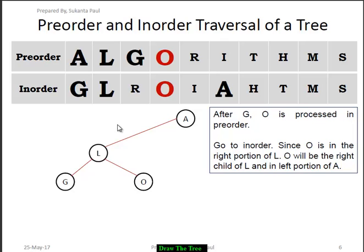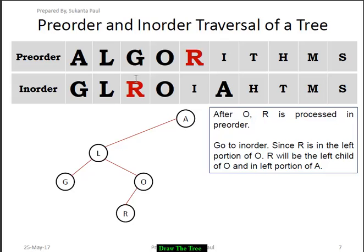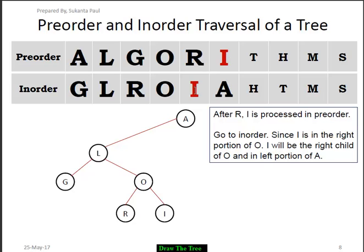O is in the right portion of L, so O will be the right child of L. Then we proceed to the next node, which is R. In in-order, R is present in the left portion of O, so R should be the left child of O. Then we proceed to the next node, which is I. In in-order, I is present on the right side of O, so I should be the right child of O.